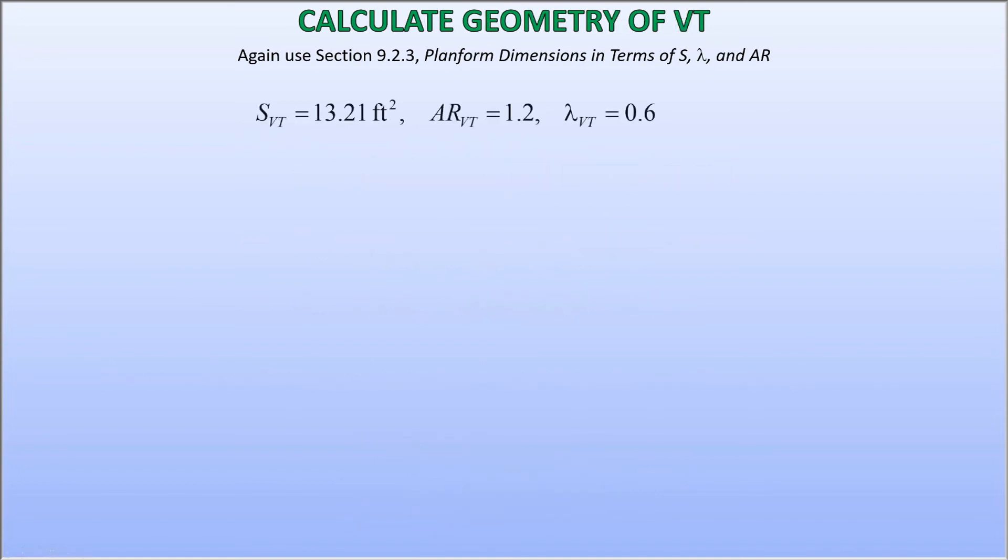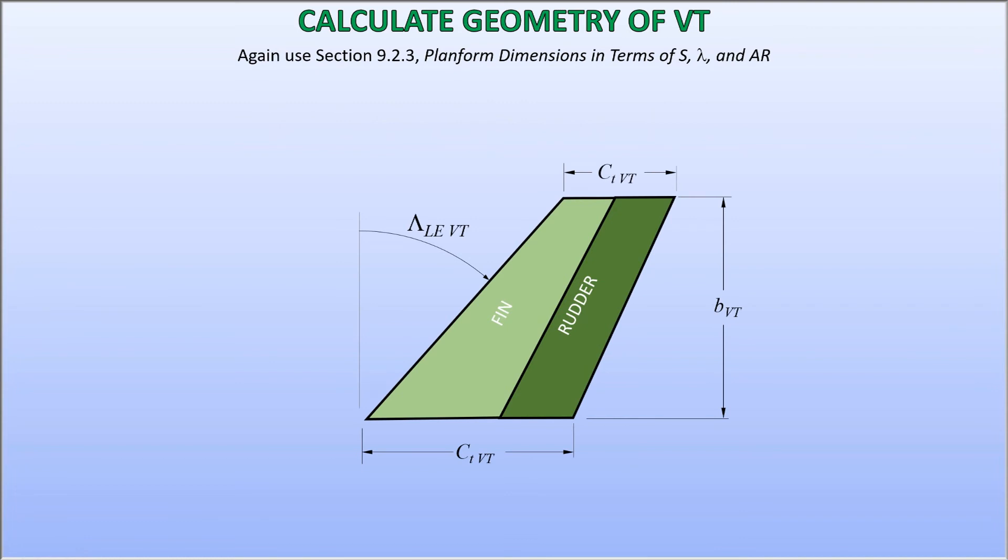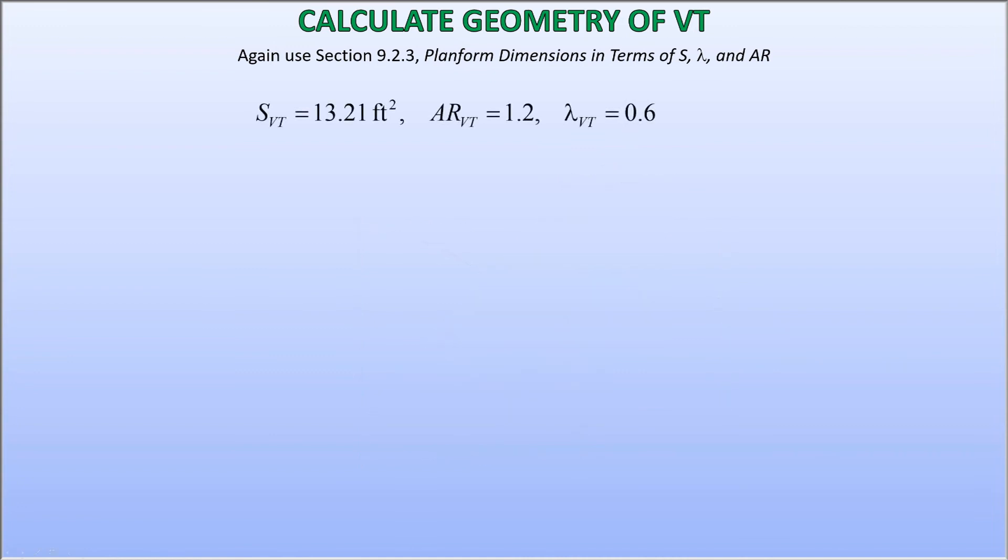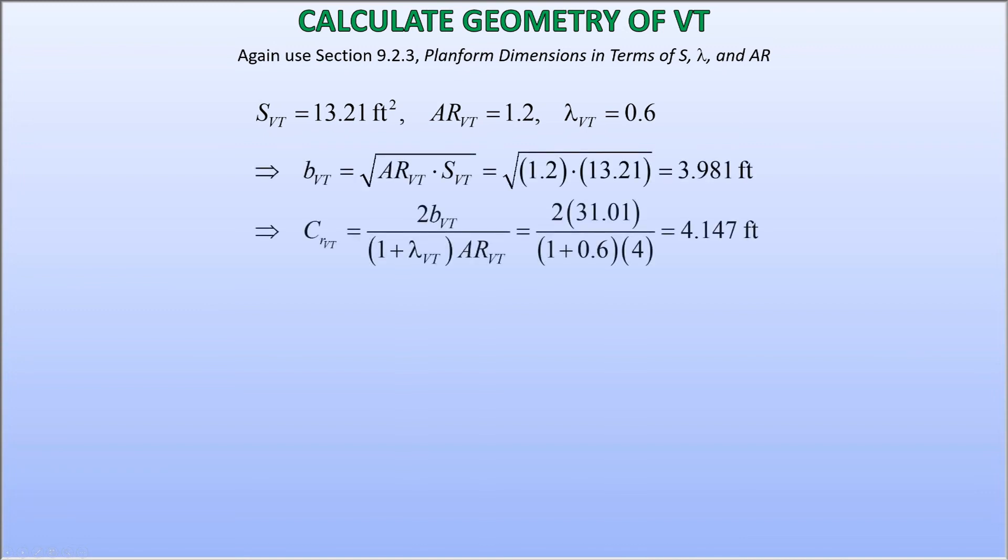Let's treat the vertical tail in a similar fashion as the horizontal, but with an aspect ratio of 1.2 and the same taper ratio, 0.6. I am going to split up the vertical as well into a fin and a rudder. Again, we go to section 9.2.3 in the book, and now determine the geometry for the vertical tail. The only difference is that I want the leading edge of the vertical to have a 40 degree sweep. Why? Because I like it. That's all there is to it. Luckily, mother nature allows plenty of room for aesthetics in design. The resulting span for the vertical is 3.981 feet, root chord is 4.147 feet, and the tip chord is 2.488 feet.